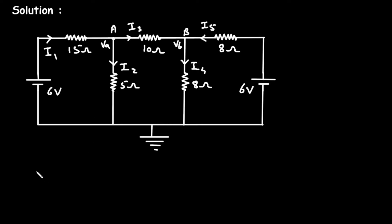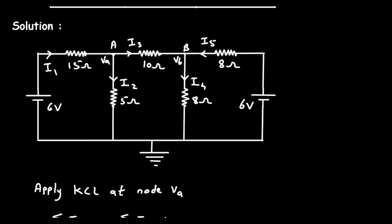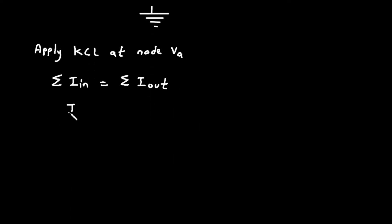Now we will apply KCL at node Va. According to KCL, that is Kirchhoff's Current Law, the summation of all currents entering a node is equal to the summation of all currents leaving the node. At this node, i1 is the entering current, and i2 and i3 are the leaving currents. So we can write: i1 = i2 + i3.